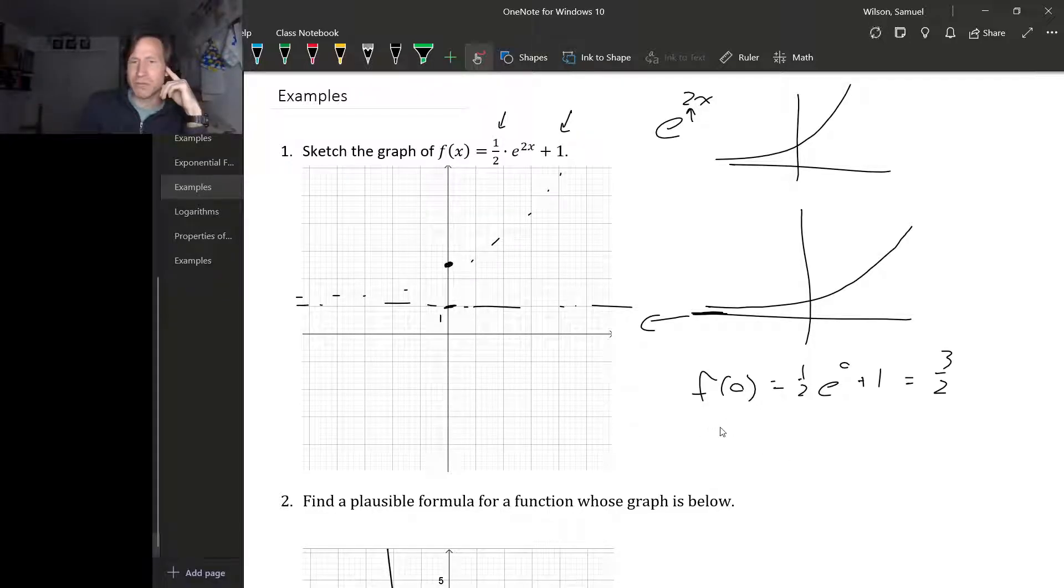Then maybe we can plug in 1. That's 1/2 times e squared plus 1. e is a messy number, so I don't know what e squared is off the top of my head. e is between 2 and 3, so e squared is going to be between 4 and 9. Let's punch it into a calculator. e squared is about 7.3. So 1/2 times 7.3 plus 1.